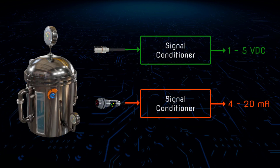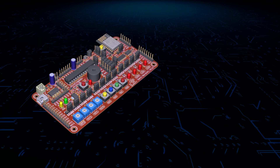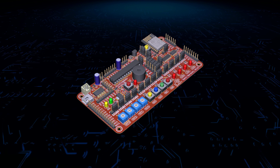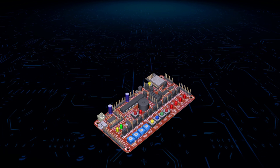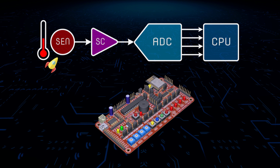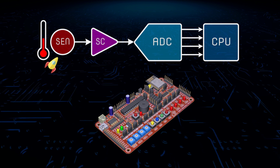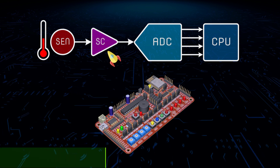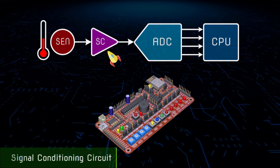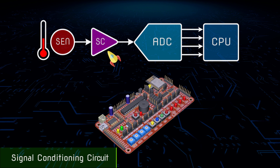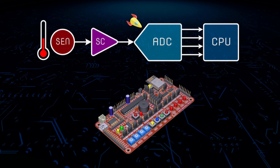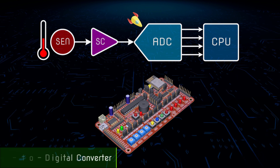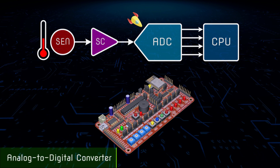Now moving into our system — the digital computer or microcontroller system. All output parameters of the sensor, including resistance and current, will be converted into an appropriate voltage by the signal conditioning circuit. The output voltage of the signal conditioning circuit will then be converted into digital data using a special converter called the analog-to-digital converter, or ADC.